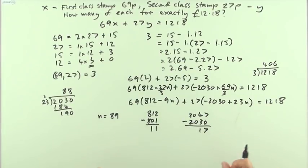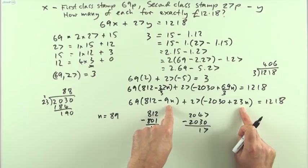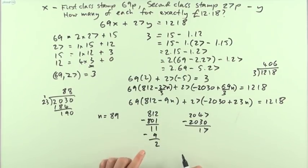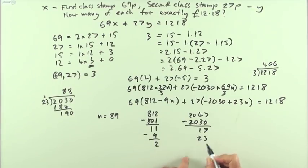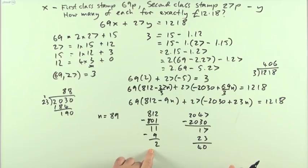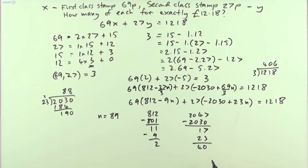So there's one solution. 11 69 pen stamps, 17 27 pen stamps, but of course, I could take off, and that was 89 of them. If I was to take another lot of 9 off of this, dropping it to 2, that's still a real amount, and put another 23 to balance it onto that, just that's increasing n by 1, then I got another solution, 2 and 40. I can't take away any more nines from this, and I can't take away any more 23s there, or it'll go negative. So there are two solutions.